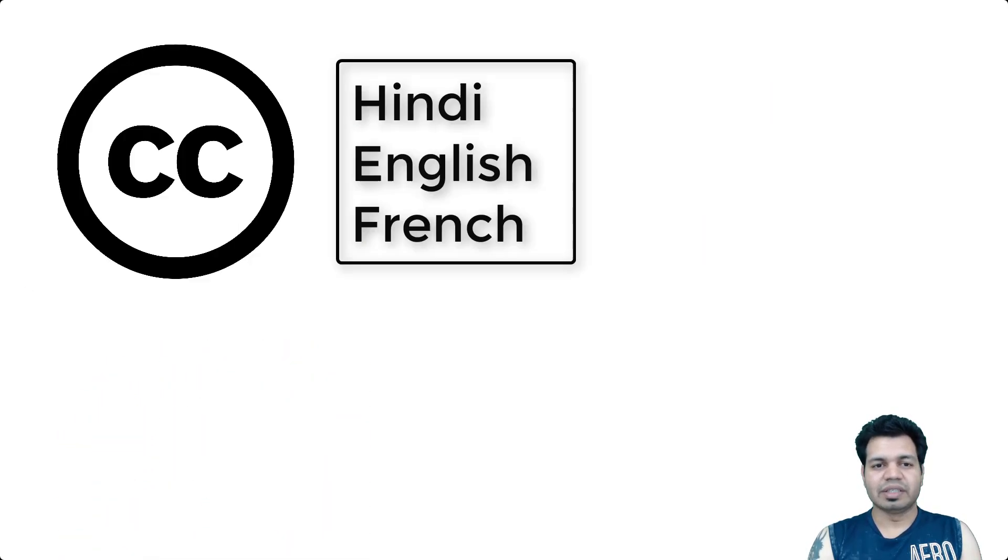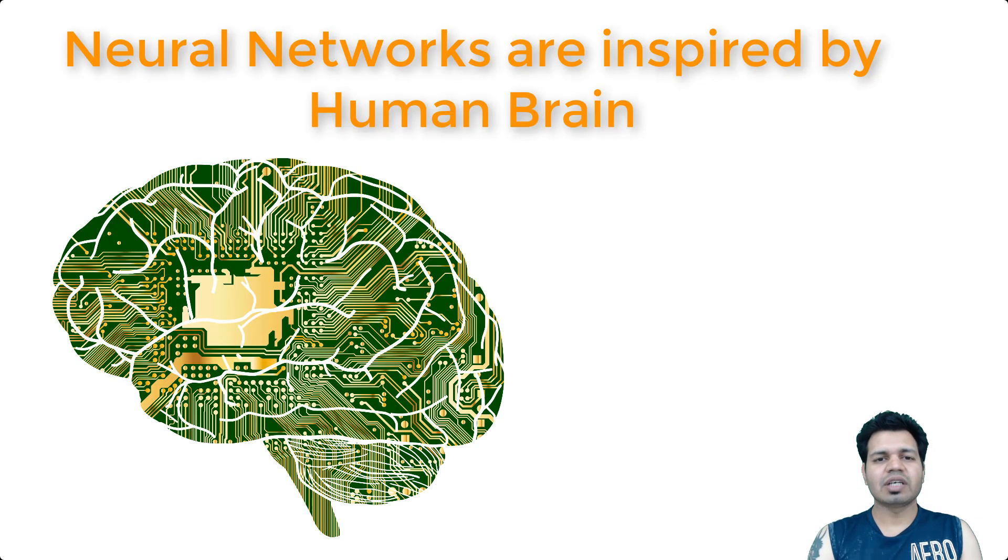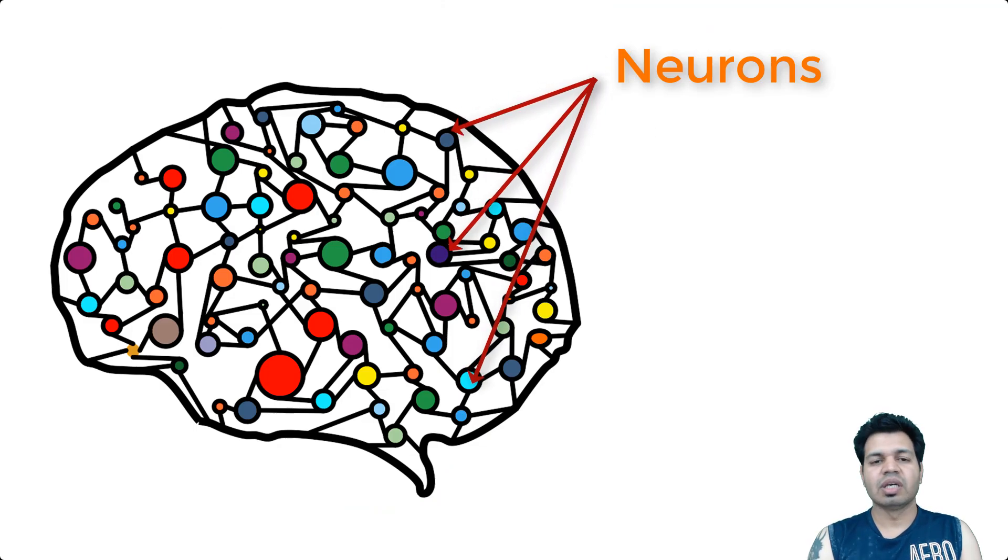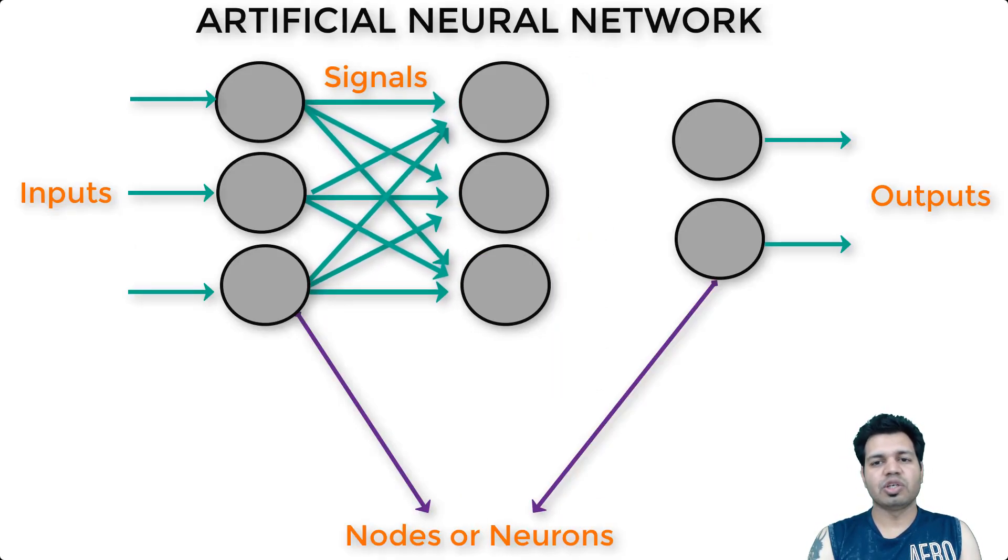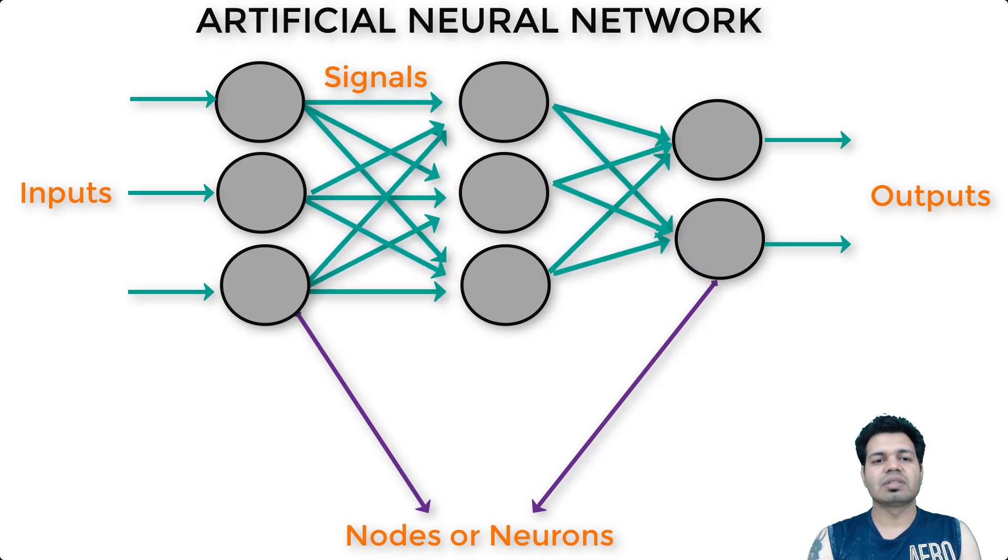I have also added subtitles in languages like Hindi, English, and French for your convenience, so you can enable them as per your needs. When it comes to neural networks, artificial neural networks are computing models which are inspired by the human brain. These neural networks are collections of neurons which are interconnected together, and neurons are the basic building blocks of neural networks. Just like the human brain, a neuron in an artificial neural network can transmit a signal to other neurons, and that receiving neuron transmits the signal to downstream neurons.